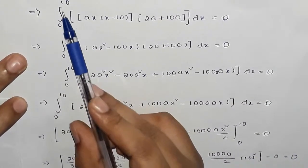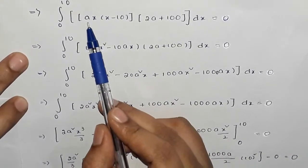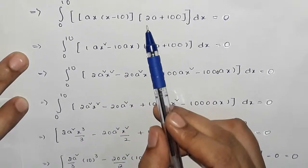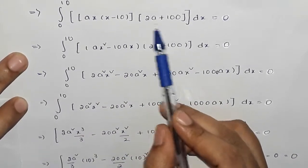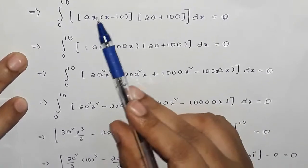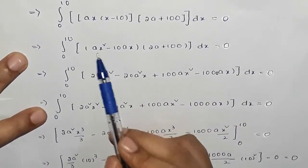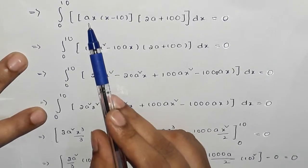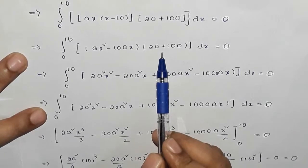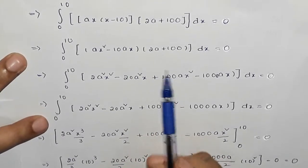The integral from 0 to 10 of the trial function y = x(x − 10) multiplied by the residual function r = 2a + 100, dx equals 0. We first multiply: x into x gives x squared, minus x into 10 gives −10x. Then we multiply with the residual function.